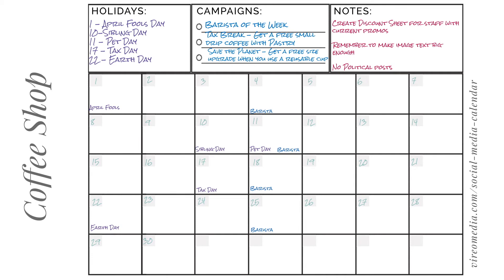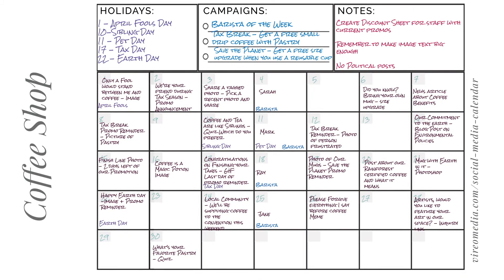One thing you'll see right now is that pet day and one of the barista of the week campaign posts fall on the same day. Barista of the week is way more important to my business, so I'm going to go ahead and skip pet day. The next part is my favorite part — the brainstorming session. This is when we commit to the posts we're going to do for the next month and get to use all our creative juices. I've added posts to nearly every day, and as soon as I write them down in big letters, I've committed to them.